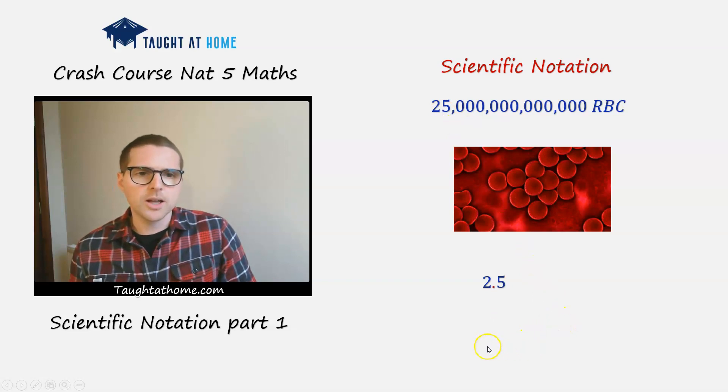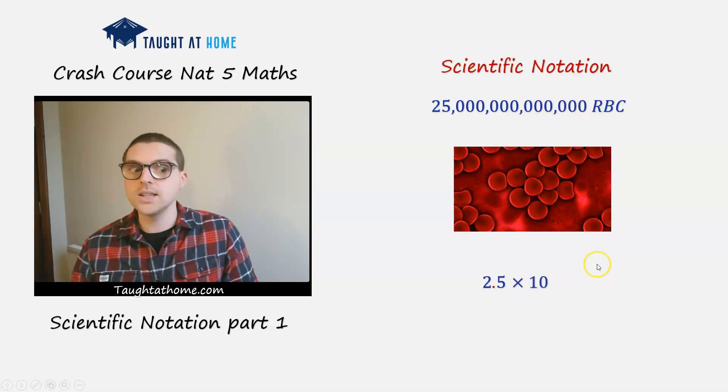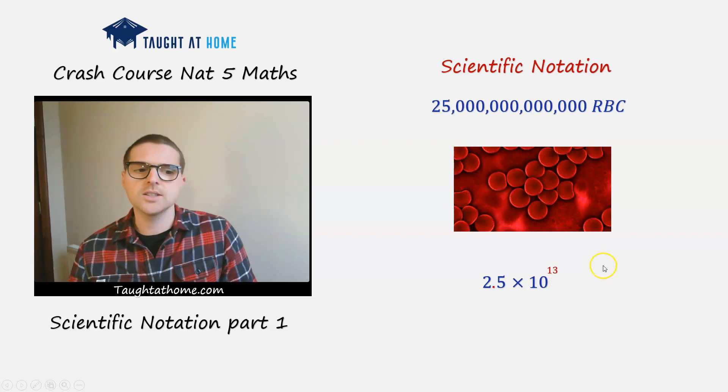And what we want to do is we want to multiply it by 10. So how many times do we have to? So we've got 1, then it's another 3, 4, another 3, 7, another 3, 10, then another 3, 13. So we're going to multiply it by 10, 13 times. So 10 to the power of 13.